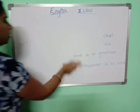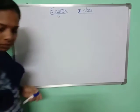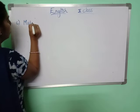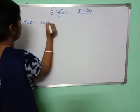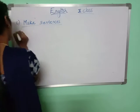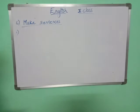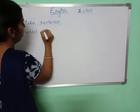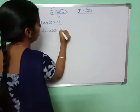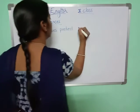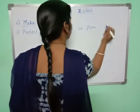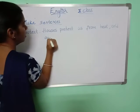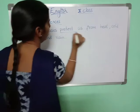One more section — make sentences. First one is protect: protect us from heat, cold and rain. Underline protect us.